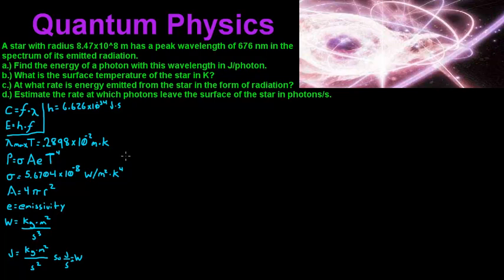Hi guys, today we're talking about quantum physics. In this problem it says a star with a radius of 8.47 times 10 to the 8 meters has a peak wavelength of 676 nanometers in the spectrum of its emitted radiation. For part A, find the energy of a photon with this wavelength in joules per photon.